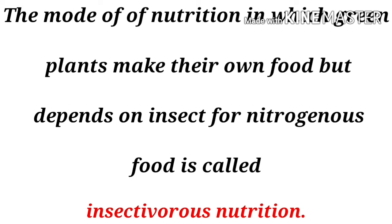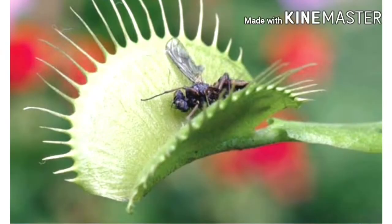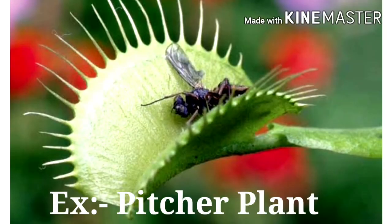The next type is called insectivorous nutrition. These plants do not get sufficient nutrients from the soil, so instead they depend on insects for their nitrogenous food. We call such plants insectivorous plants.